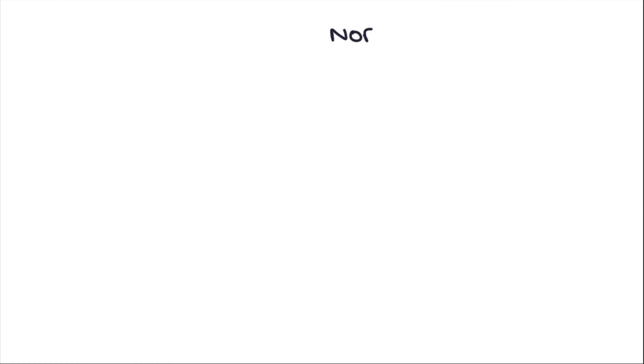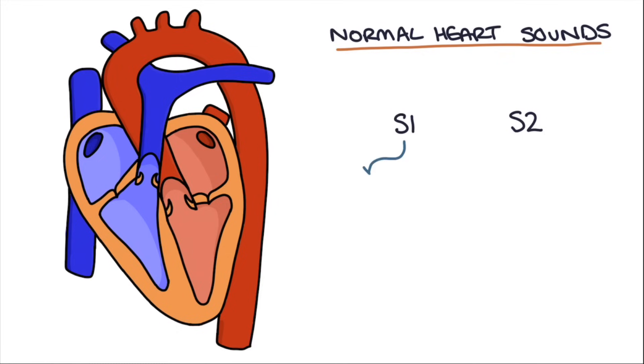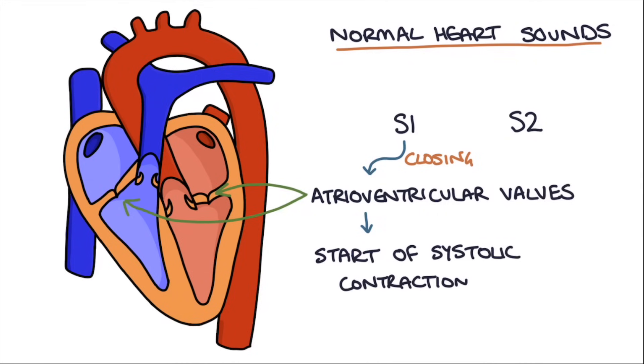First of all, we need to talk about the normal heart sounds, and we refer to these as S1 and S2. The first heart sound, or S1, is caused by the closing of the atrioventricular valves. This is the tricuspid and the mitral valve, and this happens at the start of systolic contraction of the ventricles. As the ventricles try to push blood out of the heart, the valves between the atria and the ventricles need to close to prevent blood from flowing back into the atria.